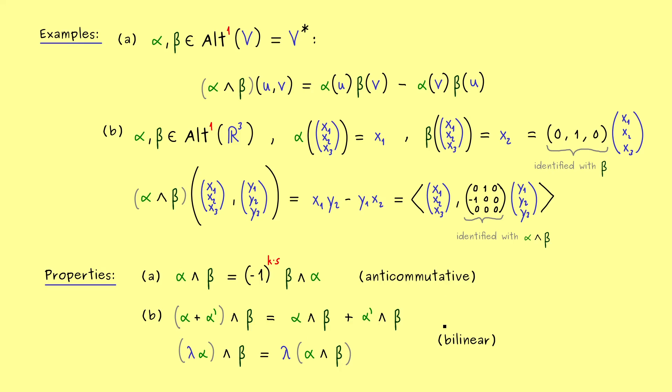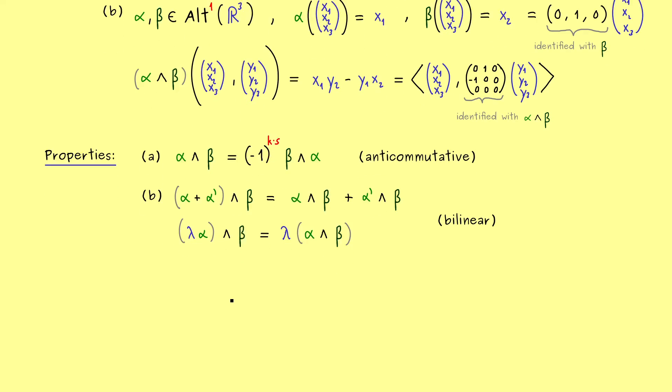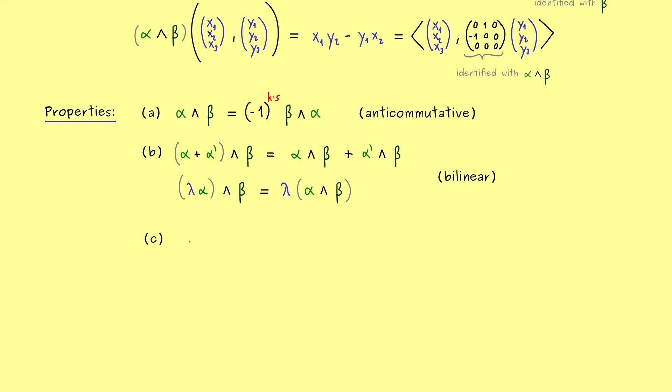And there you should see, this bilinear property is the reason we call this operation the wedge product, so it acts exactly like we would expect it from a multiplication. Therefore, you would also say we need some kind of an associativity law. This means, if we have three factors here, does it matter how we set the parentheses? And the answer is no, because associativity holds.